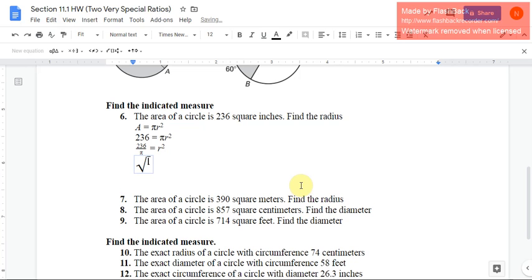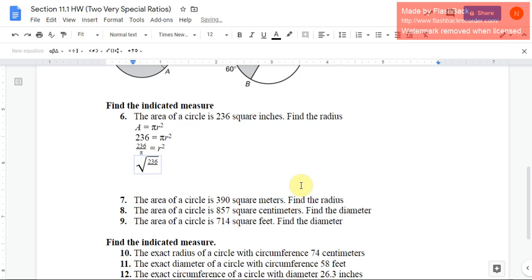I want to get a fraction in there: 236 over pi equals—oh, and you see that if I'm not careful I just continue typing inside that square root, so I need to hit the right arrow to get out of the square root—is equal to r. Okay, and then